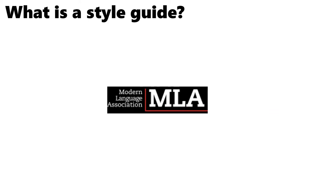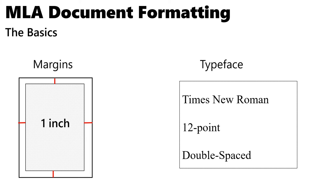Today we're going to be talking mostly about the Modern Language Association, or MLA, style guide, so let's start by talking about MLA document formatting. MLA requires a one-inch margin. Microsoft Word by default will have one-inch margins, but if you're using a different word processor, you may want to check. MLA doesn't require a specific font, but it does recommend something legible like Times New Roman at 12-point size. It also requires that your lines are double-spaced.